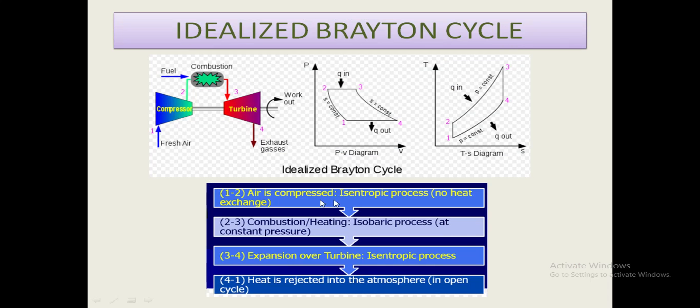Idealized Brayton Cycle: process 1 to 2 is compression of air, which is an isentropic process with no heat exchange. Process 2 to 3 is the combustion or heating process, which is an isobaric process at constant pressure, and heat is added. Process 3 to 4 is expansion over the turbine, which is an isentropic process. Process 4 to 1 is the heat rejection process into the atmosphere in an open cycle.